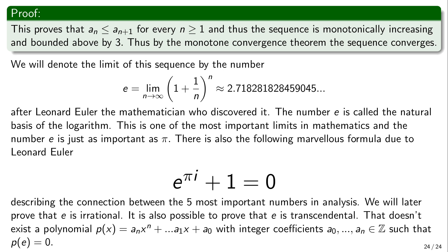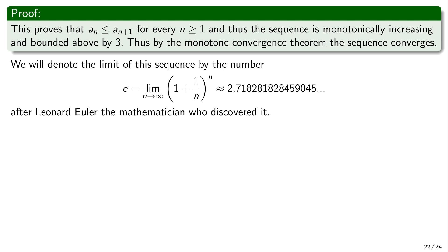With more effort, techniques from calculus can also prove that e is transcendental, meaning there is no polynomial with integer coefficients for which e is a root. For example, √2 is irrational but is a root of x² − 2, which has integer coefficients. Transcendental numbers like e do not satisfy any such polynomial equation.